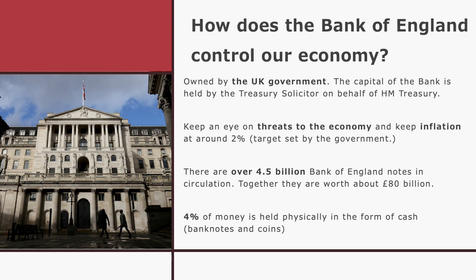There are over 4.5 billion Bank of England notes in circulation, together worth about £80 billion. Only 4% of money is held physically in the form of cash — bank notes and coins. So if only 4% of money is held physically, the rest is just numbers — there are no physical notes to represent that amount of money.